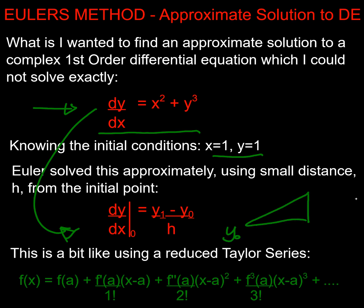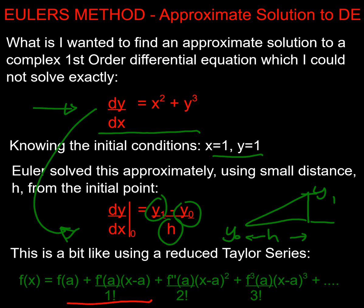So if I started at y0 and went up to y1, that would be my height. And h is going to be my little difference in x — that's my base. I could connect the two: if I knew what y0 was and I pick a small h, because I'm going in small increments, I could find out what y is. If you think about it, all we're doing is a sort of Taylor series, but we're just doing a linear approximation by just doing the first two terms.